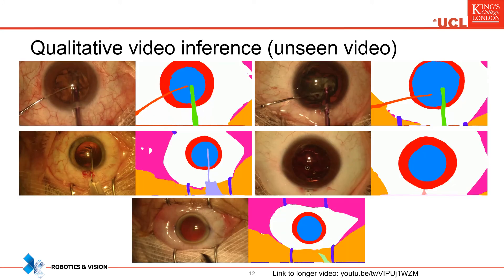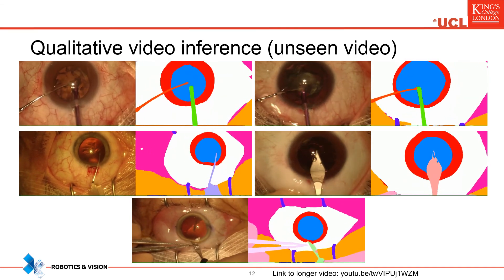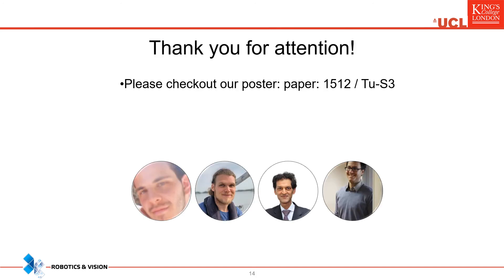We show output examples of OCRNet trained with repeat factor sampling and the Lovász loss on continuous and unseen videos — all frames are processed separately. To conclude, we have presented a conceptually simple but very effective addition to the standard semantic segmentation training pipeline that improves performance across model architectures and tasks. Our code and model weights will be made publicly available. Thank you for your attention and please check out our poster.